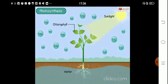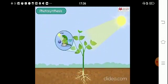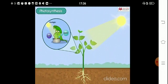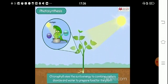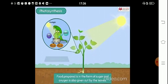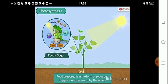And then the recipe is complete. Just like how your mother cooks food in the kitchen, the chlorophyll uses the sun's energy to combine carbon dioxide and water to prepare food for the plant. The food prepared is in the form of sugar and oxygen is also given out by the leaves in the process.